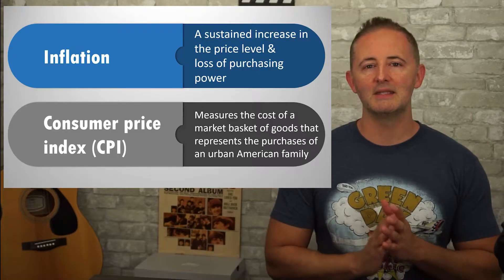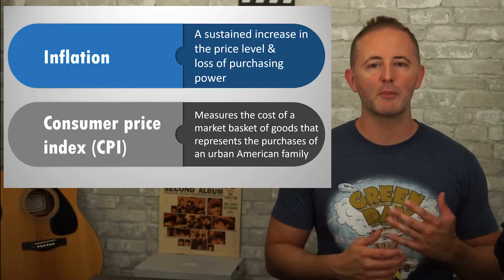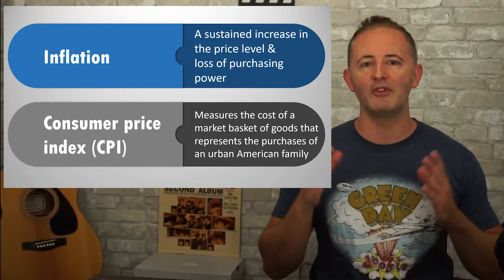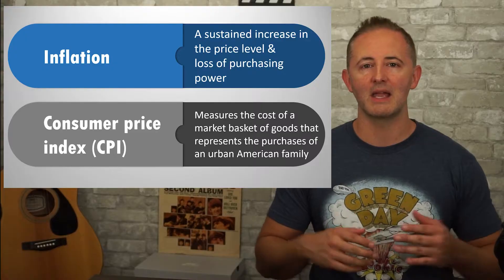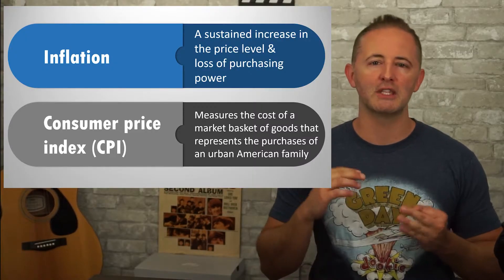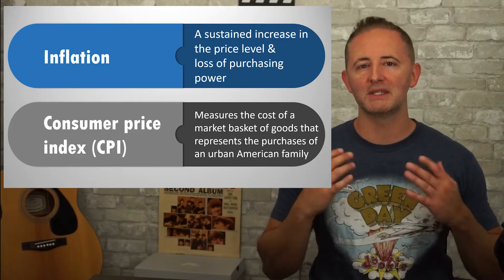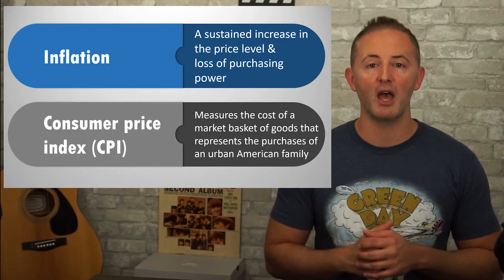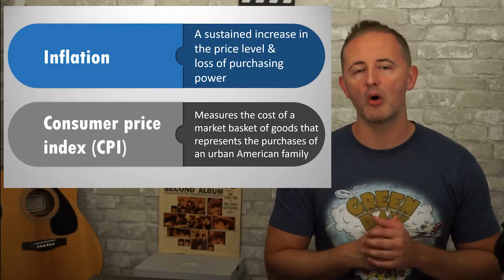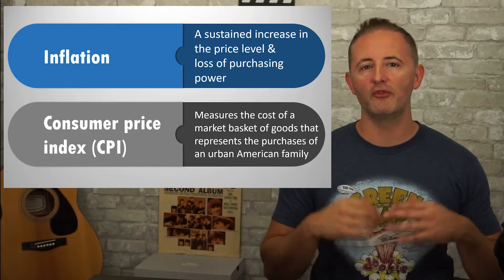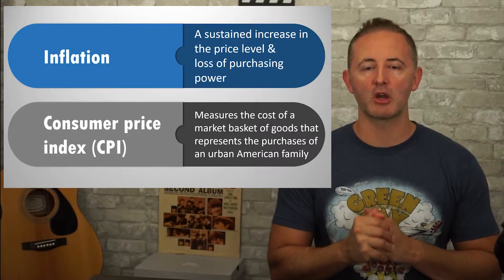The CPI measures the cost of a market basket of goods designed to represent the typical purchases of an average urban American family, including the cost of things like housing, food, transportation, and health services. They measure and remeasure how much the same basket of goods costs over time. Sometimes test questions will provide you with CPI numbers, and sometimes they won't. So you need to know what to do if they don't, and you have to calculate the cost of the market basket yourself.